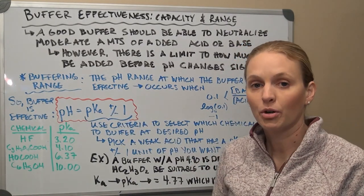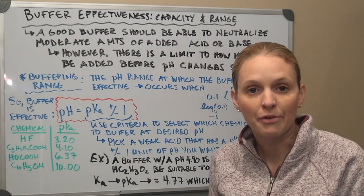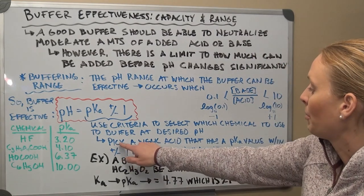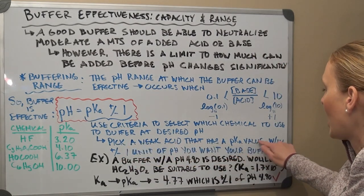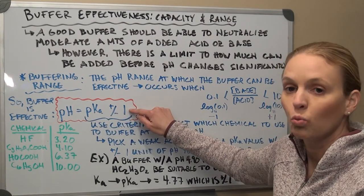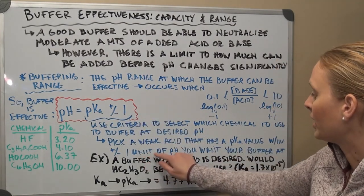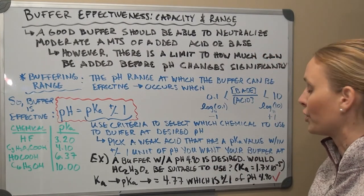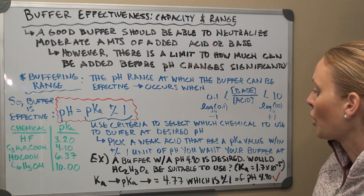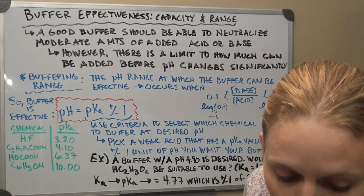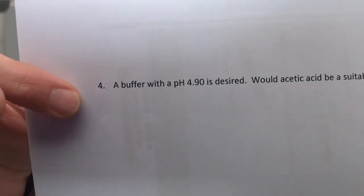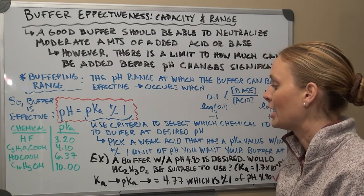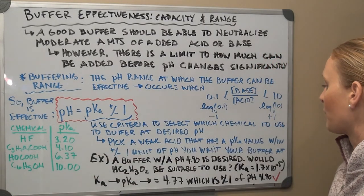We use this criteria to select which chemical to use to buffer at a desired pH. You can't just pick any weak acid — it won't be a buffer at your target pH if it doesn't meet this criteria. You need to pick a weak acid whose pKa is within plus or minus 1 unit of the desired pH.